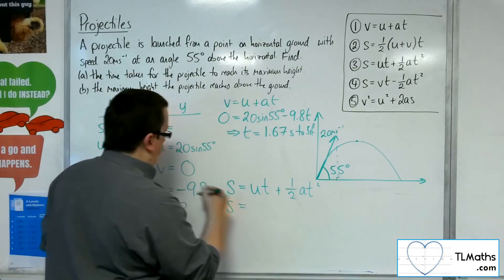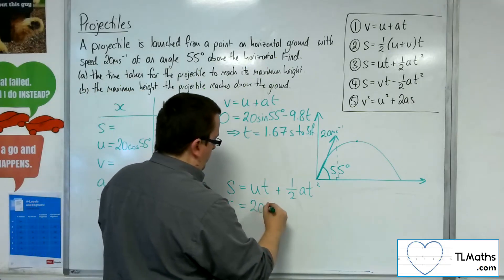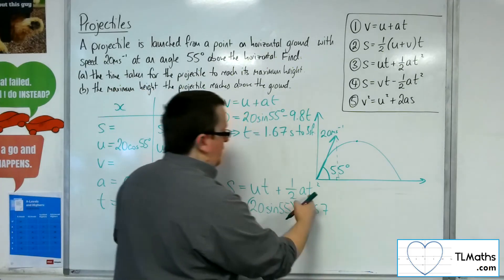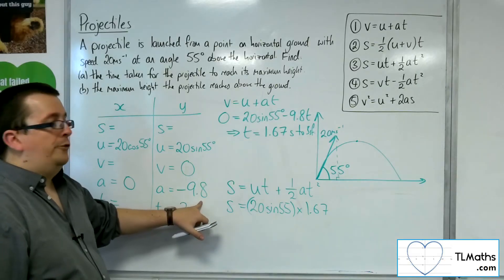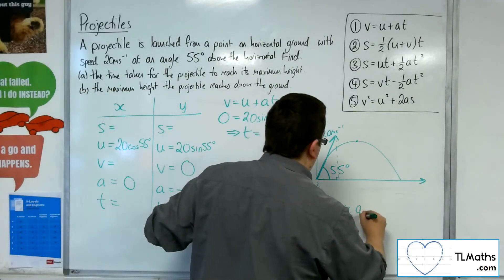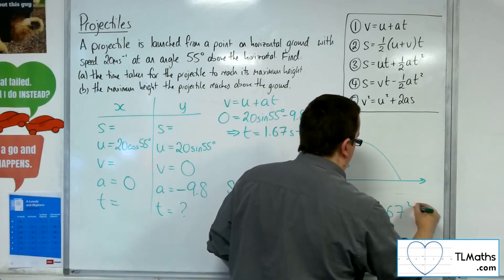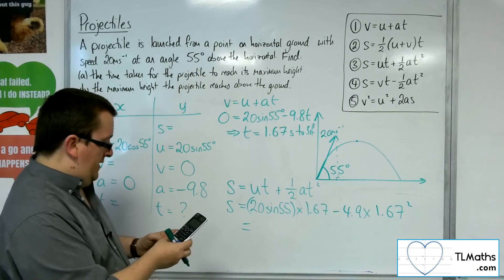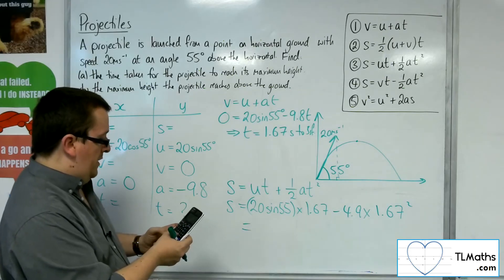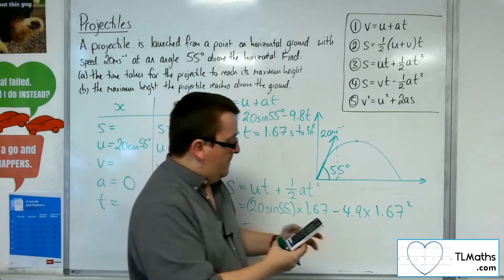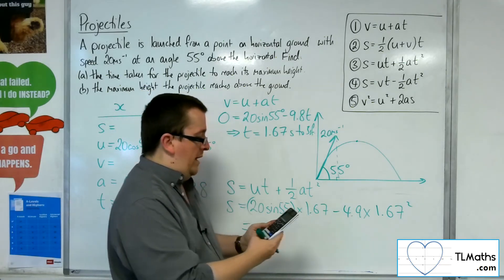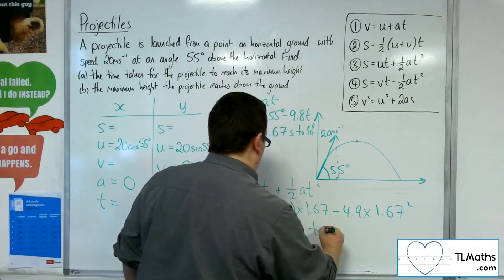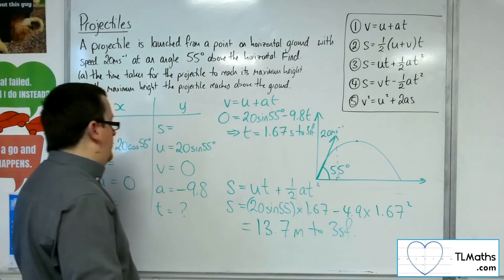So s equals u — the 20 sine 55 — times by t, the 1.67, plus one half times a. Half of minus 9.8 is minus 4.9, so minus 4.9 times t squared, 1.67 squared. I kept that number in my calculator so I can use it here: 20 times sine 55 times my answer, take away 4.9 times my answer squared. That gives me 13.694, so 13.7 metres to three significant figures.